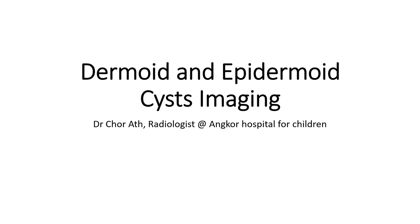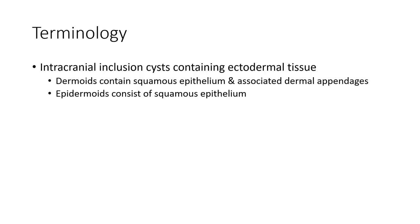Hello everyone. Today I'm going to show you how dermoid and epidermoid is seen in brain imaging. Dermoid and epidermoid are intracranial lesions containing ectodermal tissue. The dermoid contains squamous epithelium and associated dermal appendages. Epidermoid consists of squamous epithelium.